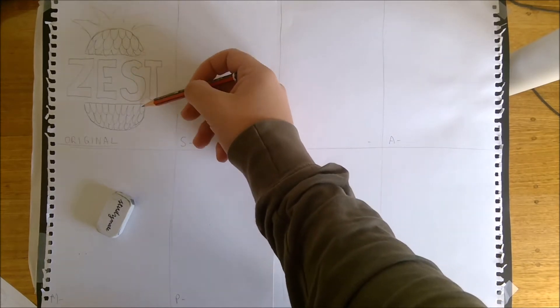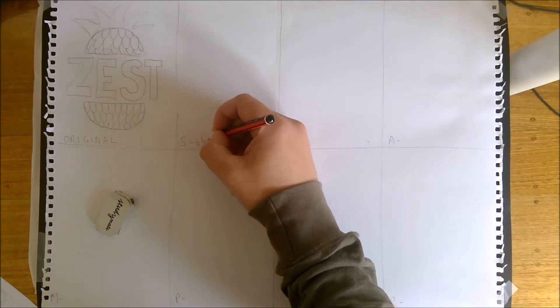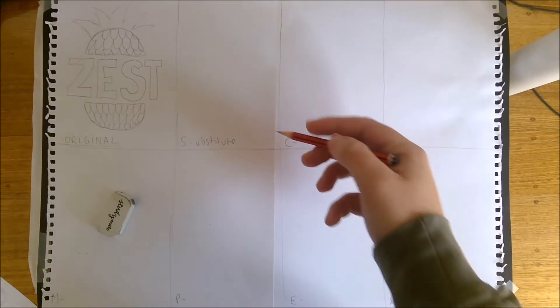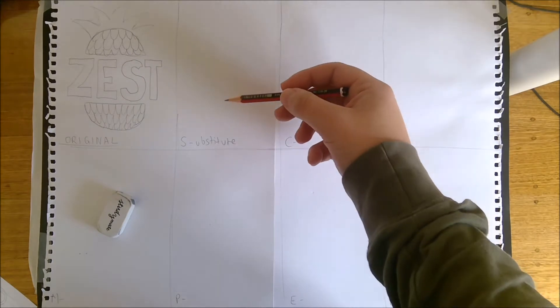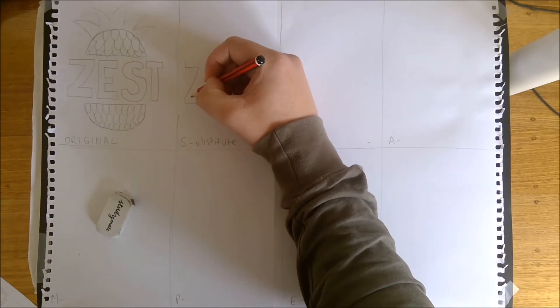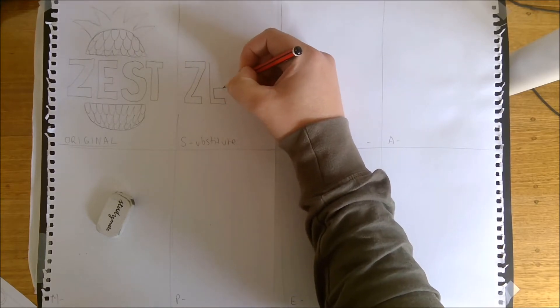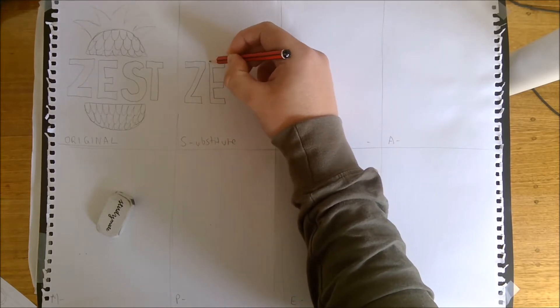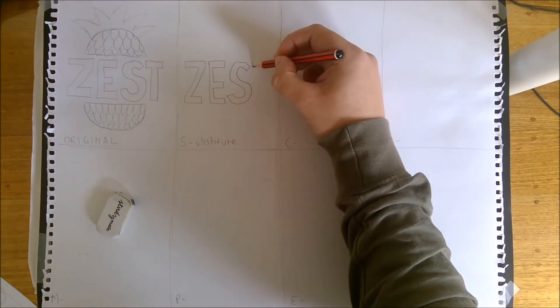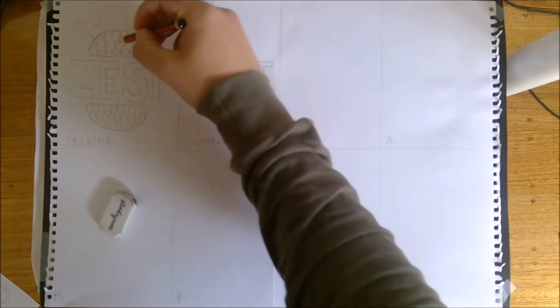The name is up to you, but it does need to incorporate a fruit or vegetable in some format. As you can see, I've used the pineapple as part of that. The S stands for substitute, and what that means is you need to change a feature of the design with something else. I'm going to redraw the name Zest in a similar typeface because I quite like it, and I'm only doing my sketches in grey lead at the moment.